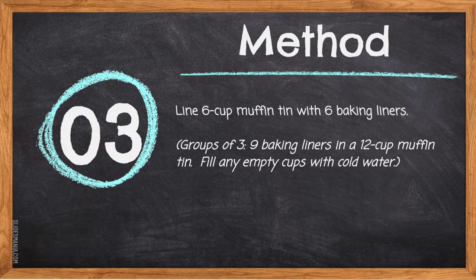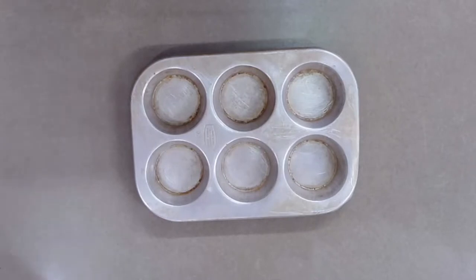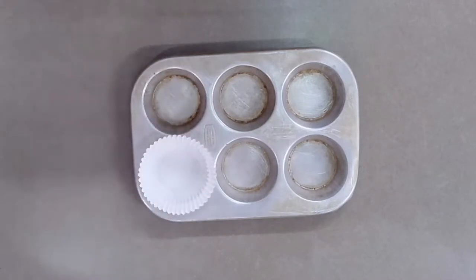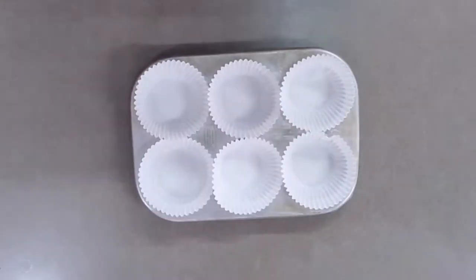Step 3: Line a six-cup muffin tin with six baking liners. For groups of three, use nine baking liners in a 12-cup muffin tin and fill any empty cups with cold water. Because the cinnamon buns have a sugary caramel filling, they're easy to burn on a cookie sheet. The muffin tin also keeps the cinnamon roll in its perfect cylindrical shape, giving you even, equal-sized circles.